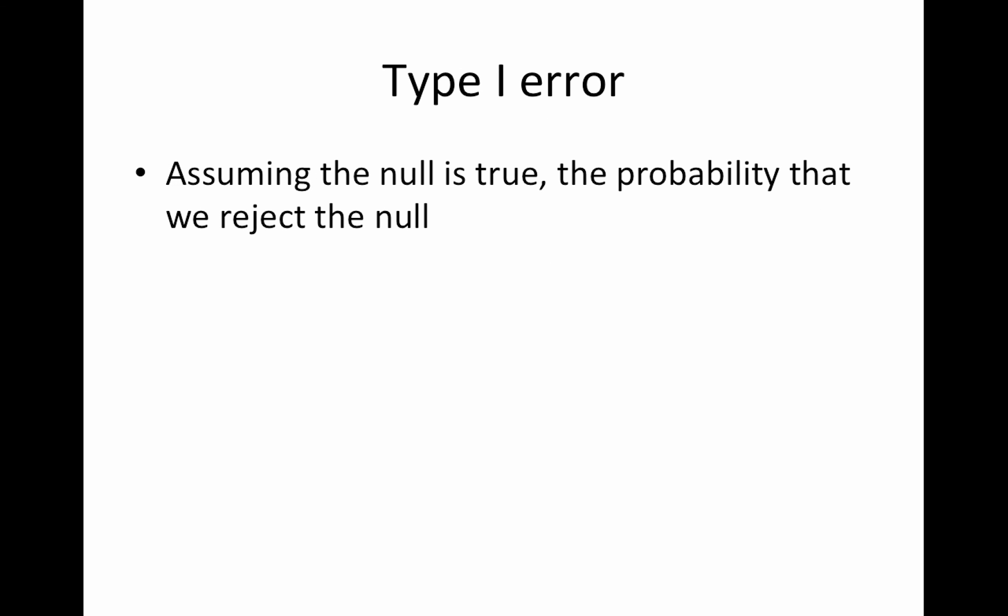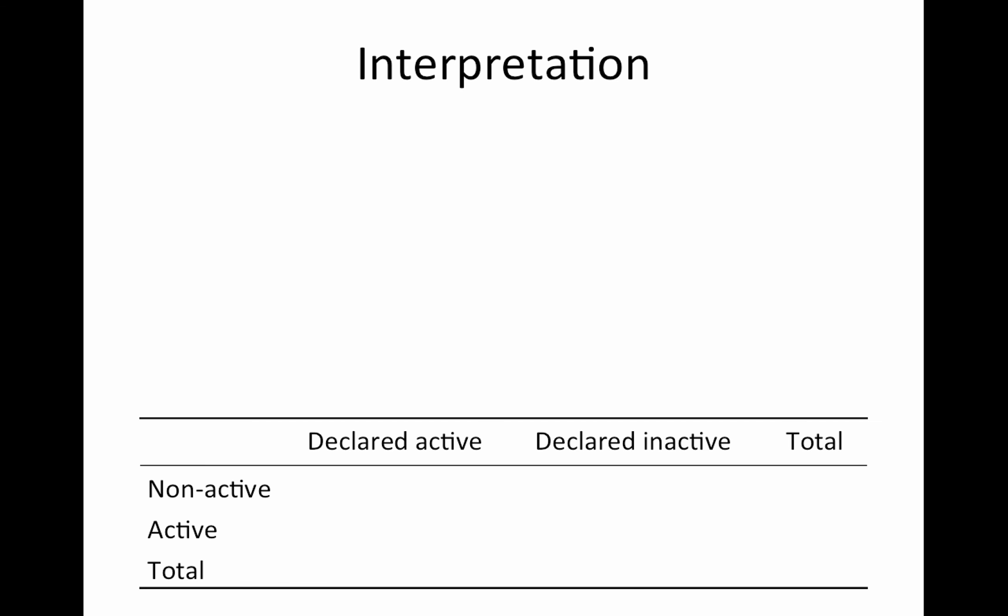The type one error is that assuming the null is true, the probability that we reject the null. So that is our 0.05. This means that five percent of the time we'll have a false positive. Now if you just run a handful of tests this isn't a huge deal, but in reality with our imaging data we're running hundreds of thousands of tests at once, so it becomes a big deal.